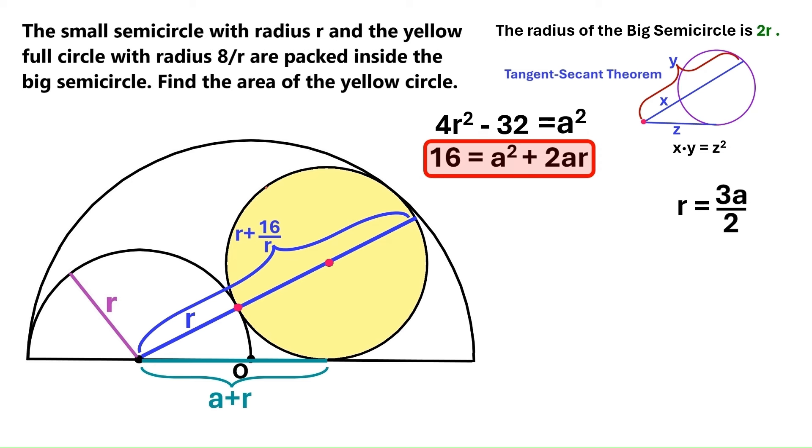And we can go back to any of these equations and substitute r with 3a over 2. I think I'll go for this one. So if we replace r, we get this. I'll do the math for you. It turns out a is 2.